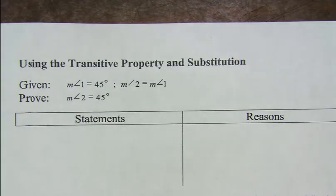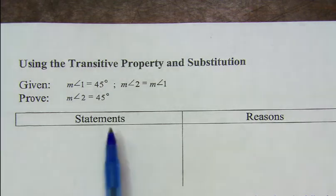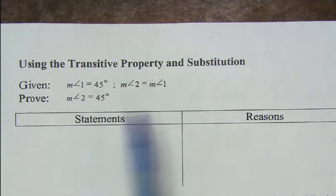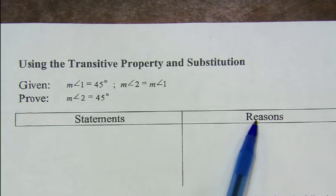Let's take a look at actually writing a proof. For a two-column proof, you're going to have two columns: a column for your statements — things that you know are true — and a column for your reasons, which is why you know those things are true.